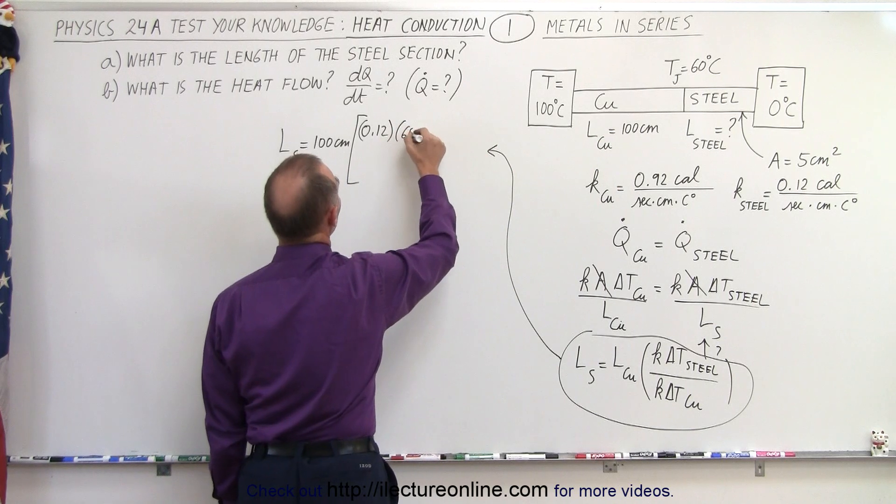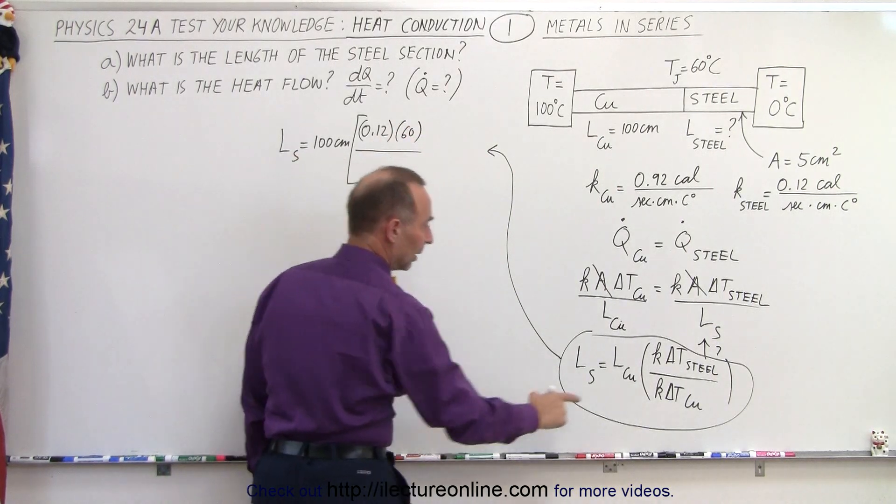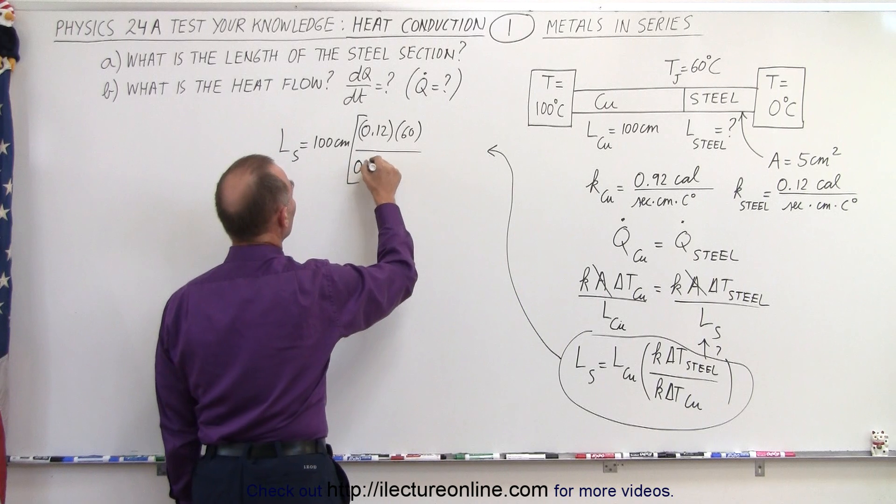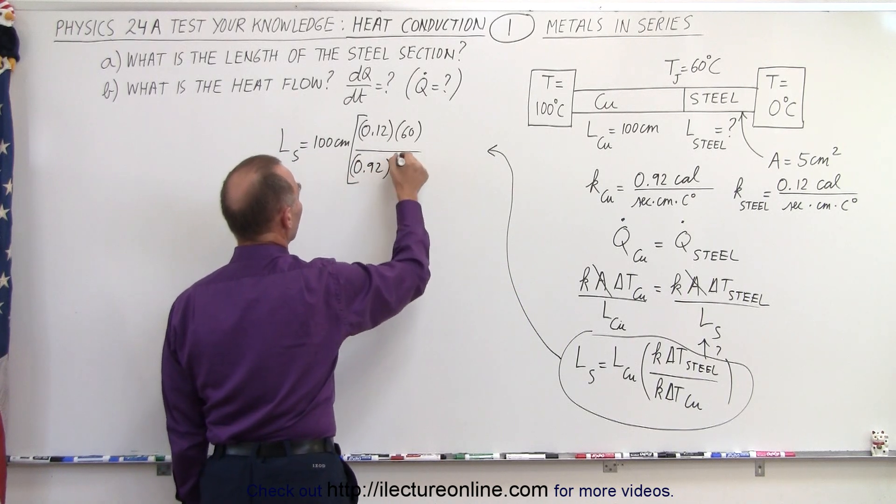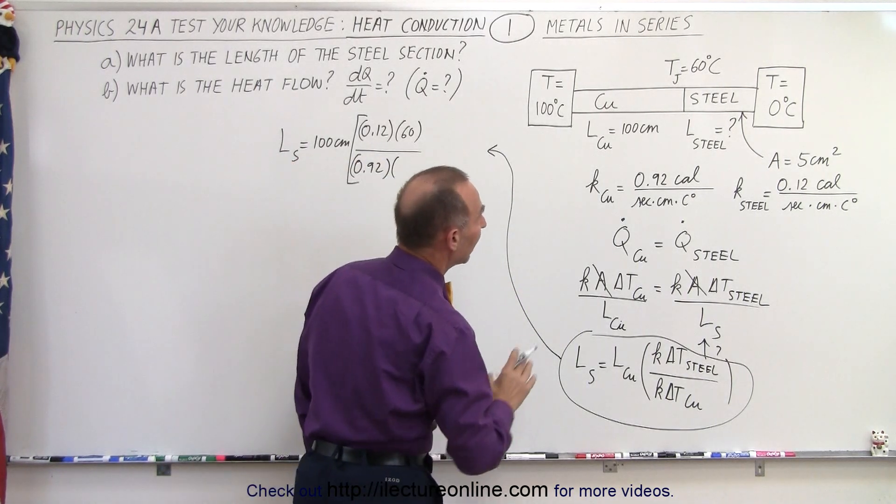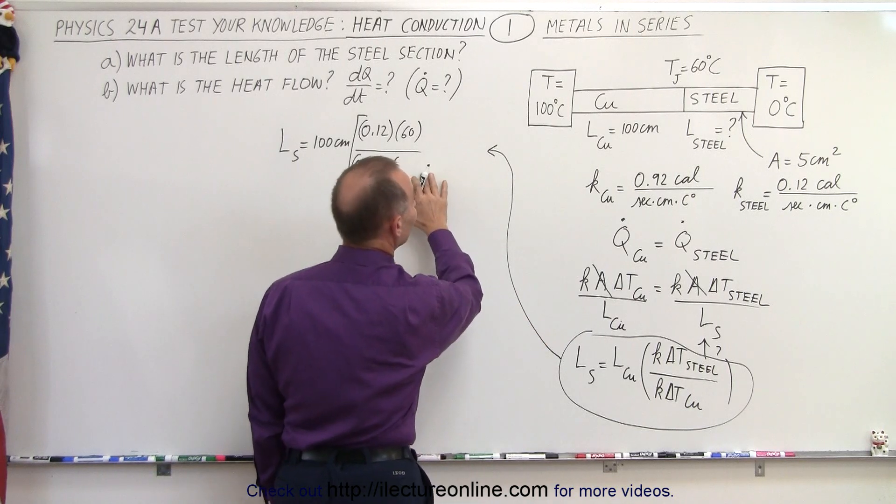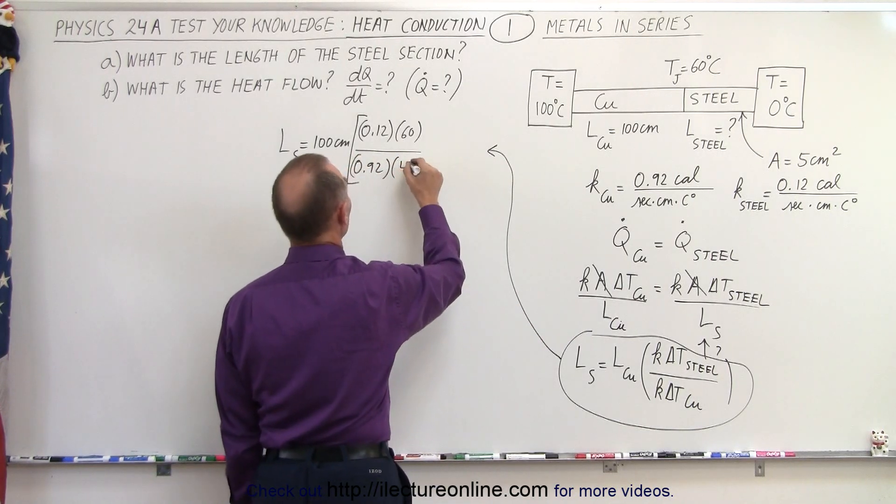The delta t for steel would be the difference between 60 and 0, so that would be 60 divided by the k for copper, which is 0.92, because copper conducts heat a lot better than steel. And the difference temperature would be from 100 to 60, which is 40.